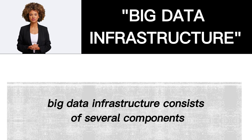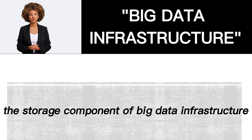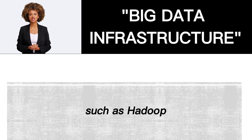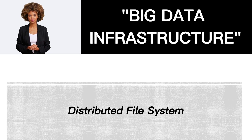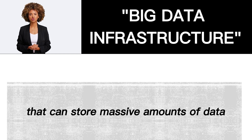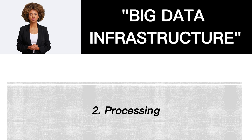Big Data Infrastructure consists of several components, including: 1. Storage — the storage component includes distributed file systems such as Hadoop Distributed File System (HDFS) or Amazon S3, that can store massive amounts of data across multiple servers.